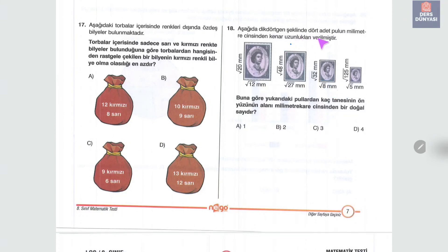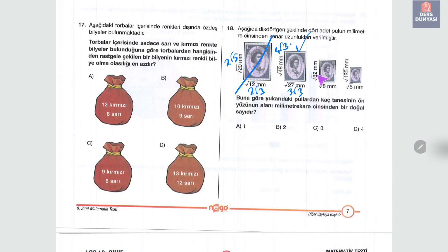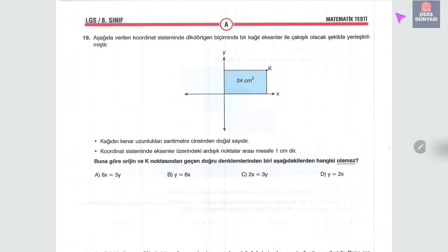On sekizinci soruda dikdörtgen şeklindeki pulların kenar uzunlukları verilmiş; ön yüz alanının doğal sayı olması için karakök içindeki sayıların aynı olması lazım. Kontrol: 2√5×2√3 olmaz; 4√3×3√3 olur; 4√2×2√2 olur; 5√5×√5 olur. 3 tanesinin alanı doğal sayıdır.